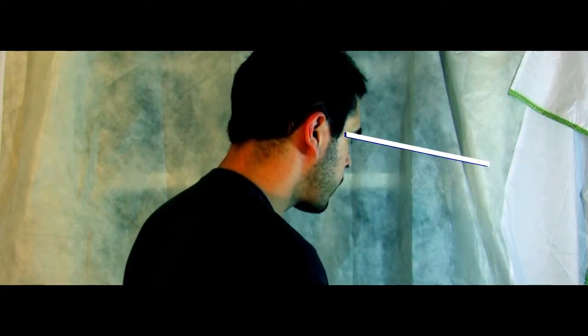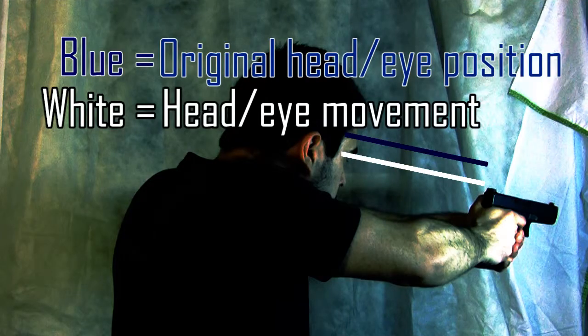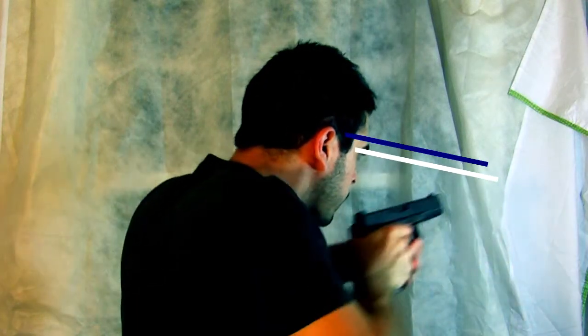The white line protruding from my eye socket will track my head and eye movement as I begin and complete the draw stroke. The blue line is a marker as to where my head and eye were the moment before I began the draw, my point of origin.